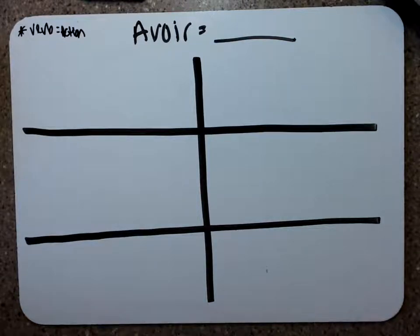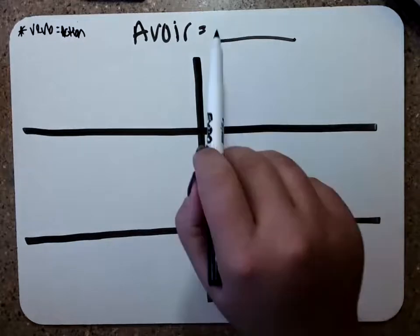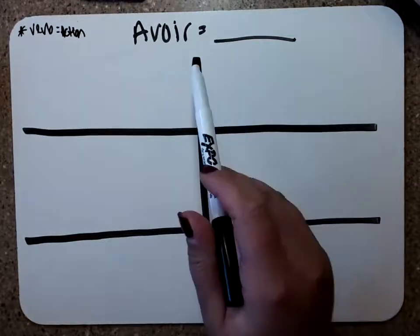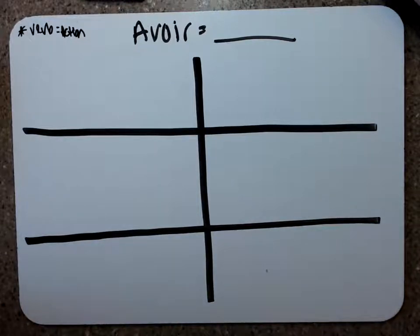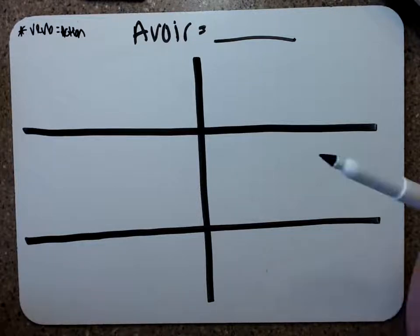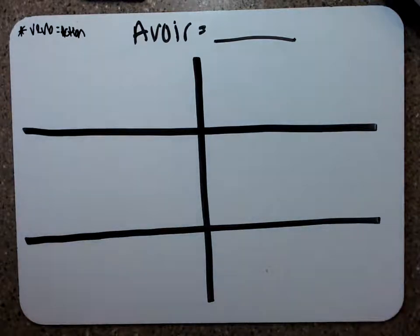So I want to make sure that we get it right and we start from pretty much the beginning. Whenever I teach you verbs, it is always taught just like this. I put the verb in French right up here, and then we'll fill in what it means. And then you also get this little table. You should remember this table from when we did subject pronouns.